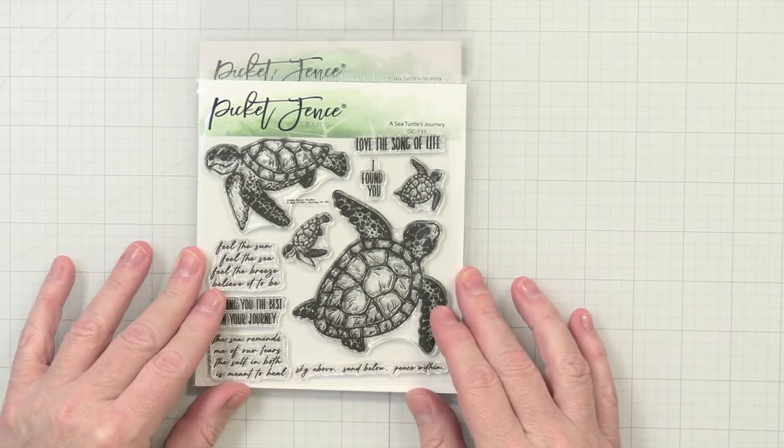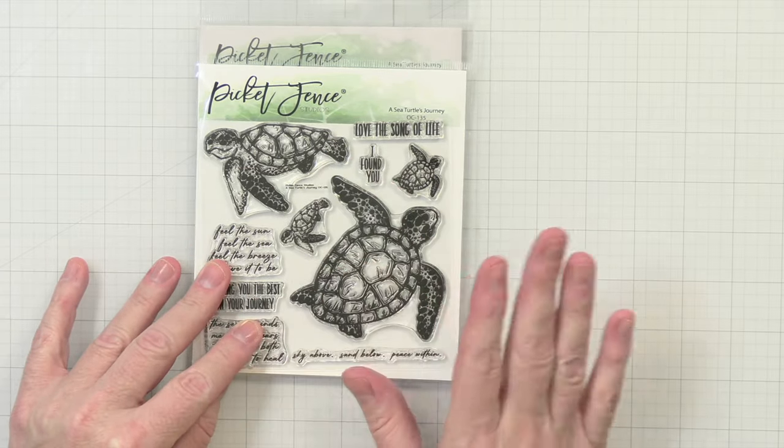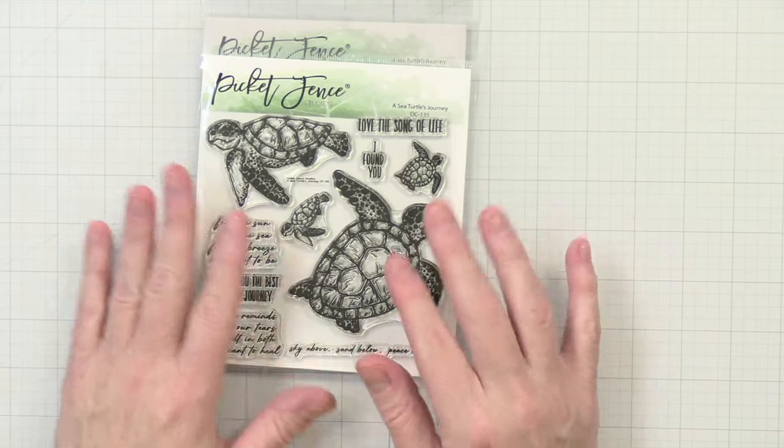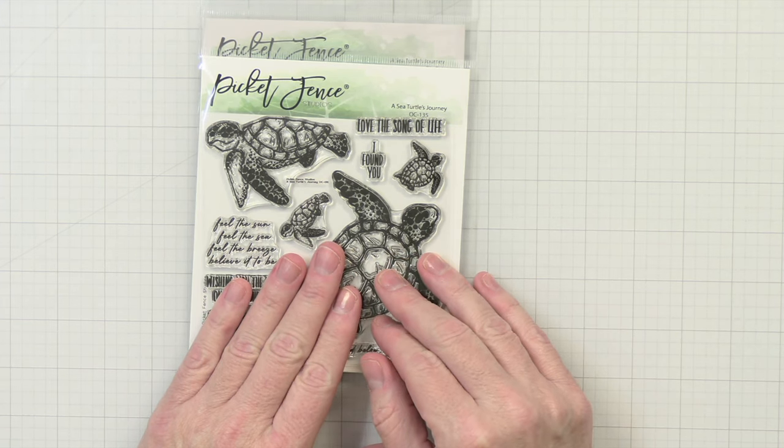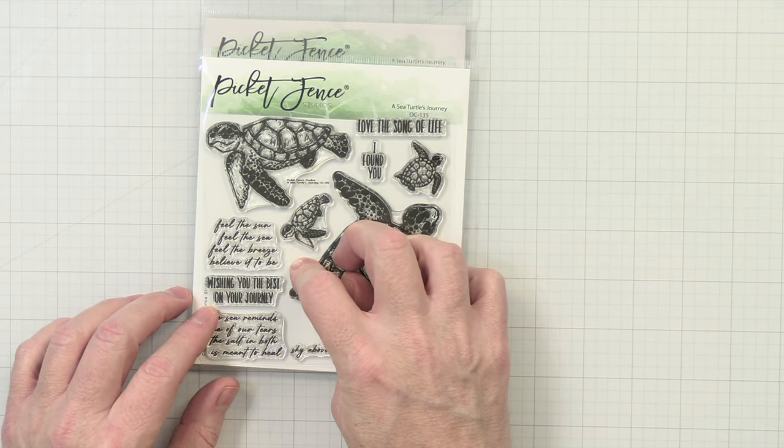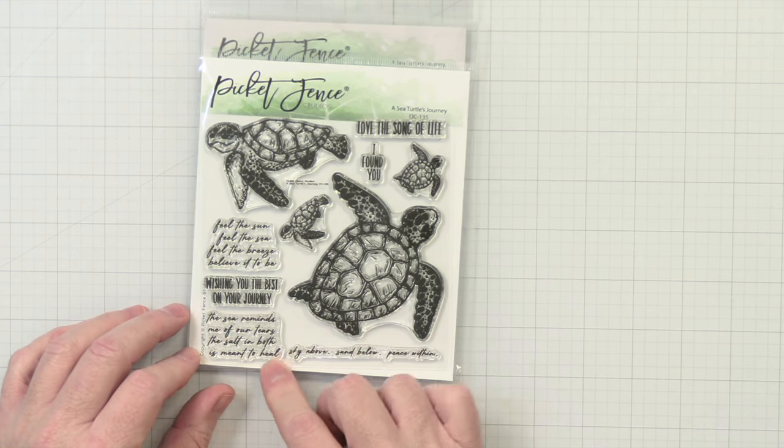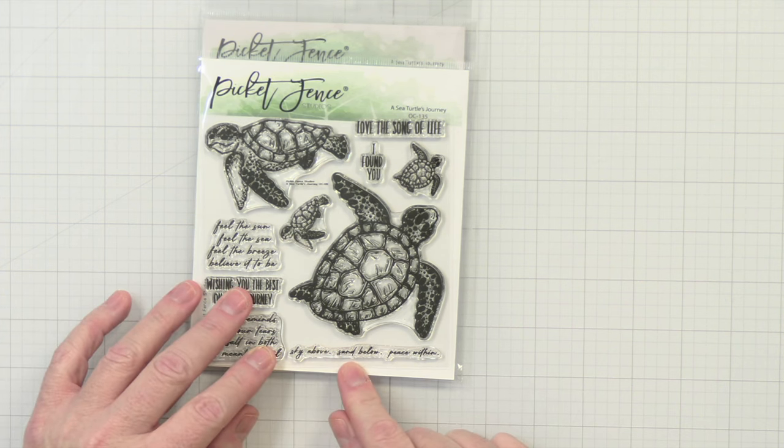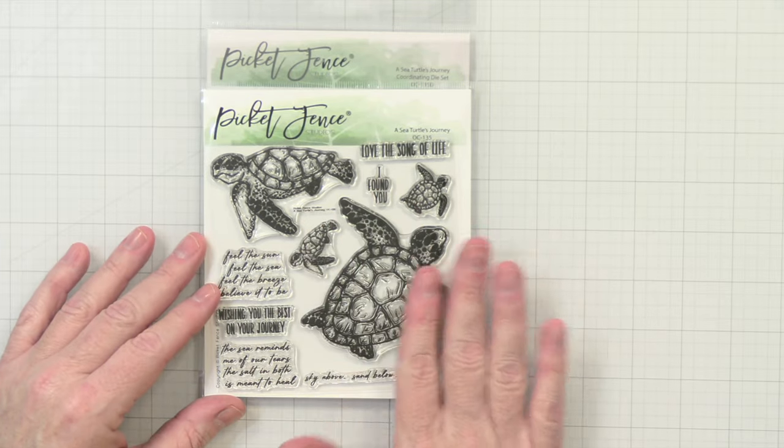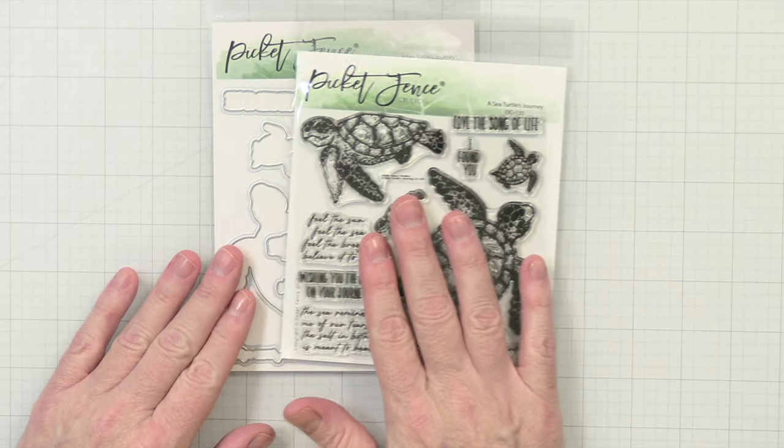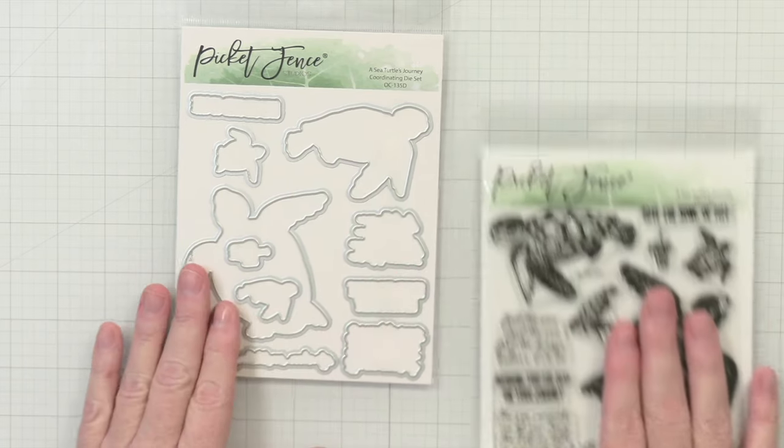Oh my goodness you guys, oh so cute. I love me a turtle. I love me a family of turtles. So dang cute. I wonder what a family of turtles is called. Hmm, I have to look that up. Anyway, really adorable. This stamp set is called A Sea Turtle Journey. The sentiments is love the song of life, I found you, feel the sun feel the sea feel the breeze believe it to be, wishing you the best on your journey, the sea reminds me of our tears the salt in both is meant to heal, sky above sand below peace within. Really great sentiments. I really like these adorable turtles. They would be great for watercolor, Copic coloring or alcohol markers. And then of course coordinating dies.